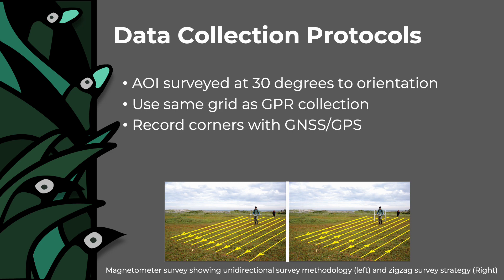Unlike GPR, targets of interest are best surveyed at approximately 30 degrees to their orientation if this is known. However, in practice the alignment of features is often unknown prior to the survey. Grids are more often set up in relation to obstacles or field orientations on the ground. More importantly, as magnetometer survey is likely to be used alongside GPR survey, it would be more expedient to use the same grid as the GPR survey, which should be set up perpendicular or 90 degrees to the orientation of the grave or graves, if this is known. The corners of the grids should be recorded with GNSS or GPS so that their location can be re-established and any features of interest identified within them.